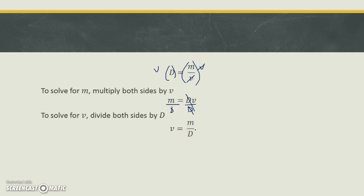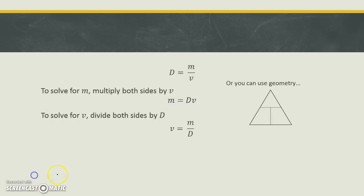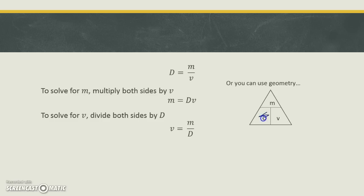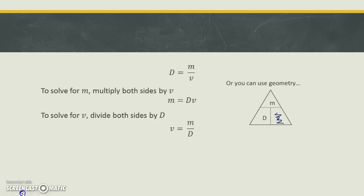But can we just use that triangle? You sure can. Here's our triangle. We've got to make sure that this stays as a fraction. What's going to go on top? If you said m, you got it right. So m over v, and then we put the d in here. If we want to solve for d, we cover d up and we're left with m over v. If we wanted to solve for m, we cover m up and we're left with d times v. What if we wanted to solve for v? We cover that up and we're left with m over d.